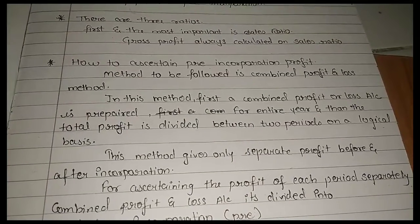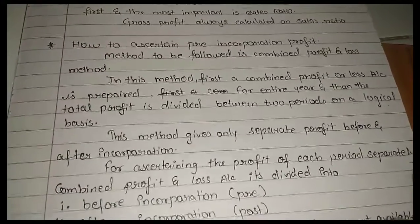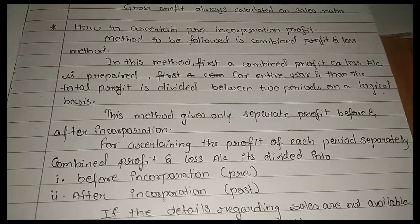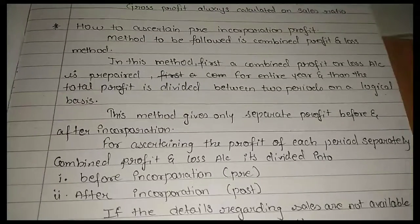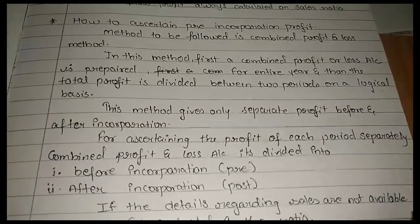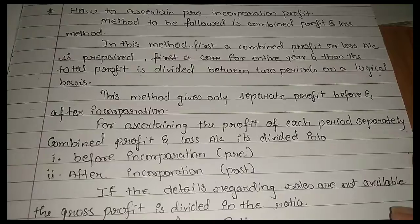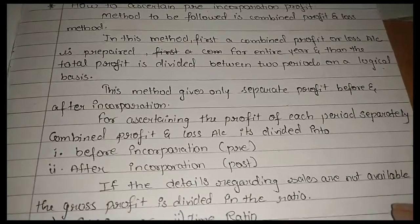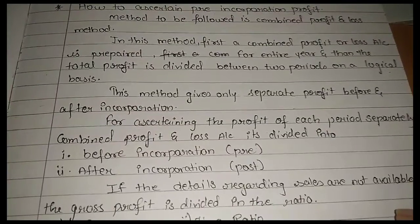In this method, first a combined profit and loss account is prepared for the entire year, and total profit is divided between two periods on a logical basis. This method gives only separate profit before and after incorporation.